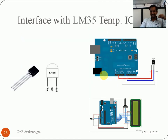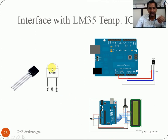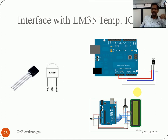The temperature sensor (LM35) is an analog device with three terminals: VCC, ground, and output. The center output pin is connected to an analog input pin (A0 or A1) on the Arduino. Once connected, it starts sensing the temperature of that place. The sensed value can be displayed on the serial monitor or on an LCD.